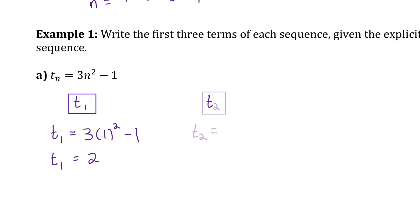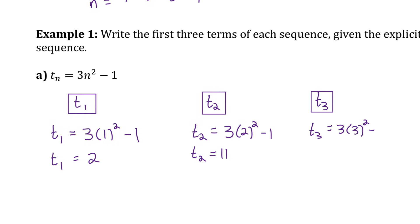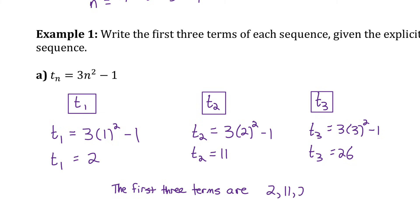To find term 2, I replace n with 2. Following the correct order of operations: 2 squared is 4, times 3 is 12, minus 1 is 11. And lastly, term 3 is 3 times 3 squared minus 1, which evaluates to 26. So the first three terms of this sequence are 2, 11, and 26.